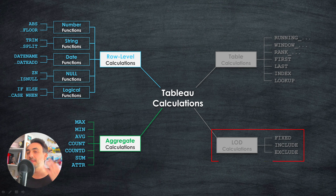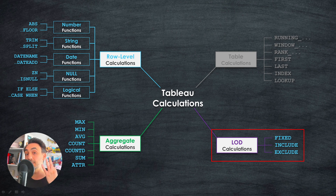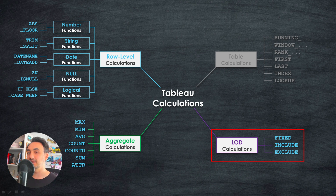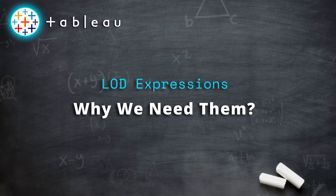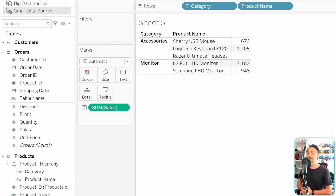Now we're going to talk about the third type of Tableau calculations: the LOD expressions, or LOD calculations. It is another type used to aggregate data in Tableau, and here we have only three functions — fixed, include, and exclude. As usual, first we have to understand the concept behind them, and then we're going to have enough examples in Tableau.